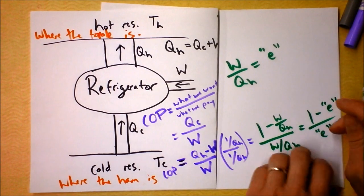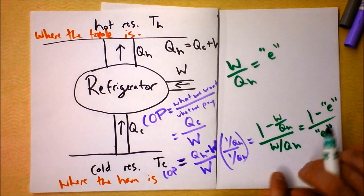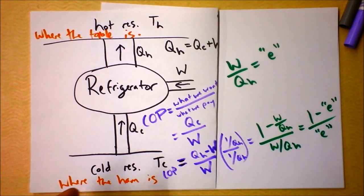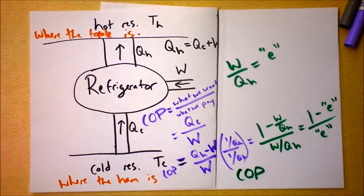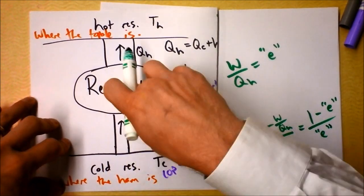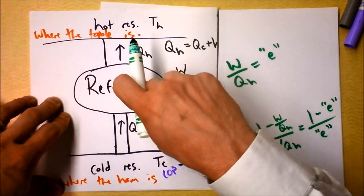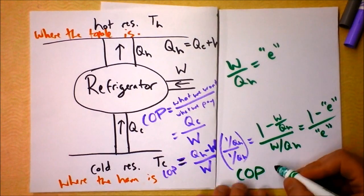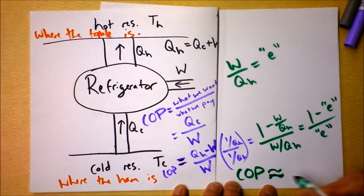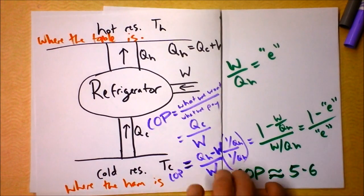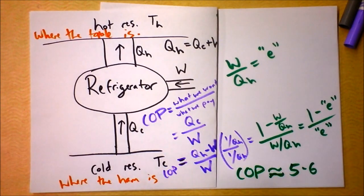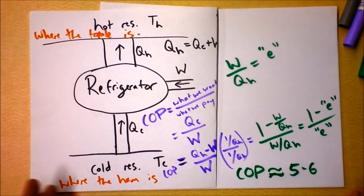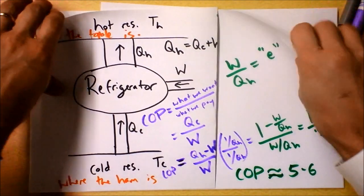This efficiency is going to be something like 70% or 30%, depending on the difference in temperature between the two reservoirs. The beautiful thing is that the coefficient of performance can very easily be more than 1. A typical coefficient of performance might be somewhere between 5 and 6 — meaning if you put in 1 joule, you could take 5 joules of heat away from the cold reservoir. We'll find a similar thing for heating your house with a heat pump.